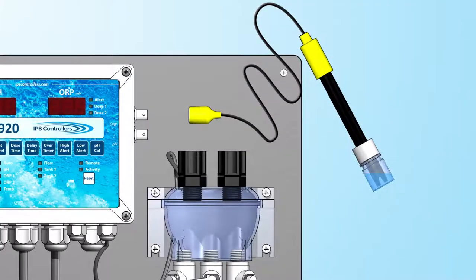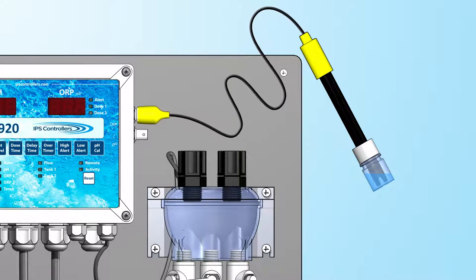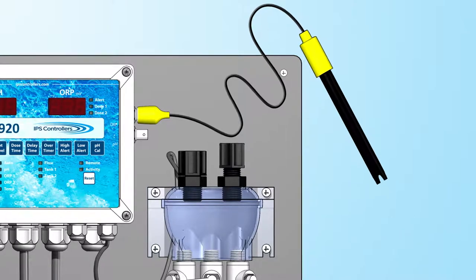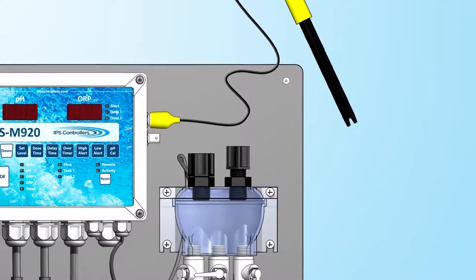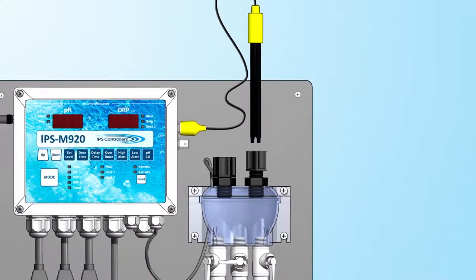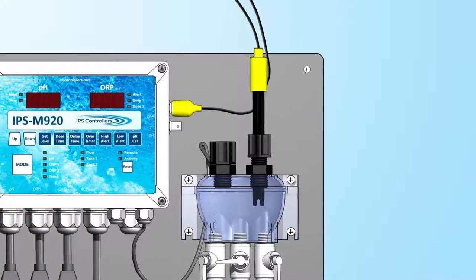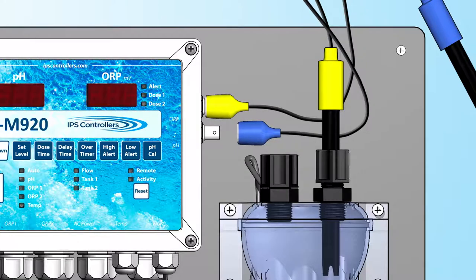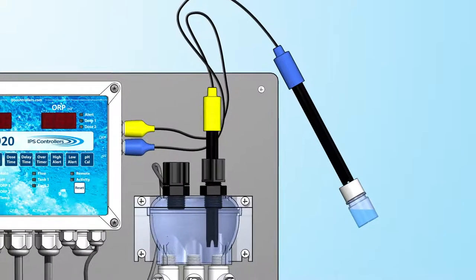To install the sensors, starting with the ORP sensor, plug the cable into the BNC connector on the controller, labeled ORP. Remove the protective bottle from the end of the sensor and set it aside for winterizing. Loosen one of the compression fittings on the top of the flow cell. Carefully insert the sensor to about one half inch from the bottom of the flow cell interior. Hand tighten the connector. Repeat the previous steps to connect the pH sensor.